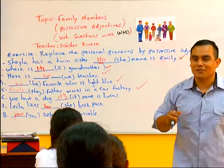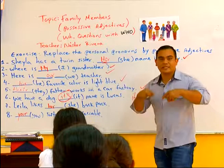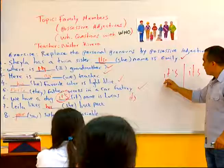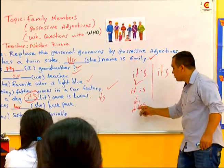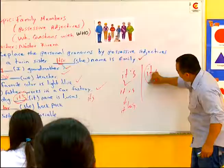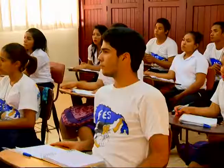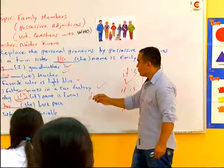Pero el its como possessive adjective no lleva apóstrofe. No confundamos it's con its. ¿Cuál es la diferencia? Aquí tenemos una contracción del verbo be — it is — o a veces también puede ser it has. El its sin apóstrofe significa su — de algo o de un animal. Lo utilizo para cosas y animales, no para personas. Its name is Lucas.